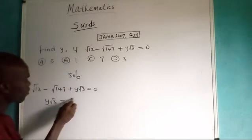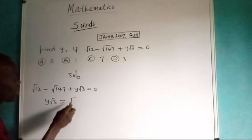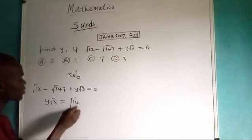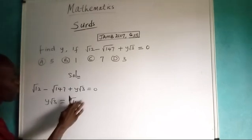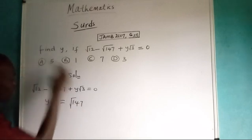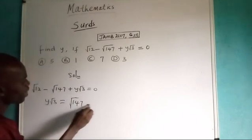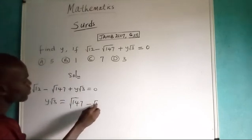Therefore, this one moving down will become positive which is now √147. We have √147 and the other one will also move. We have minus √12. This is what we have.